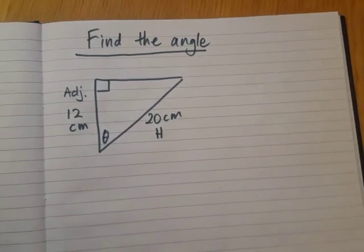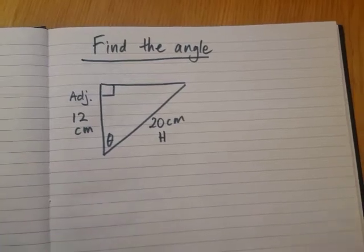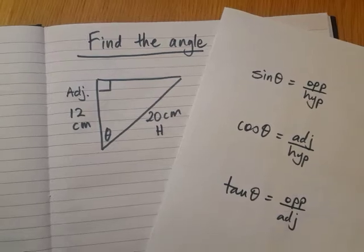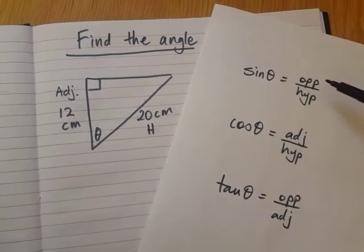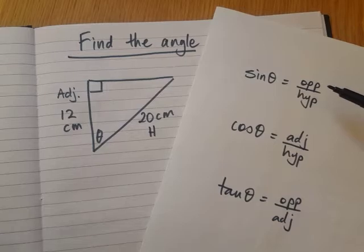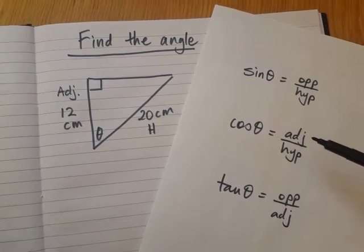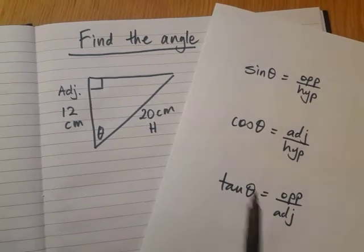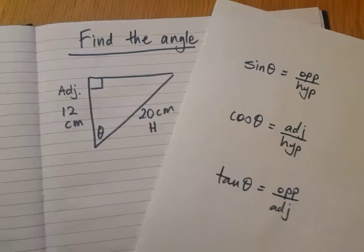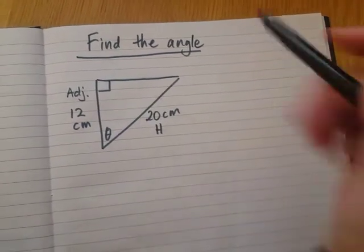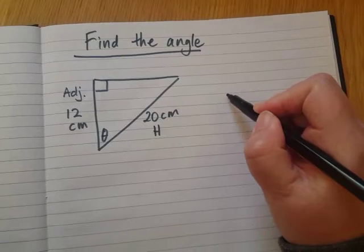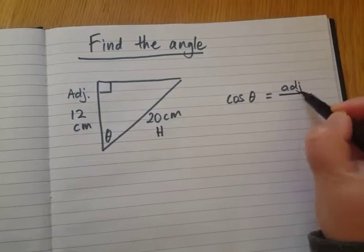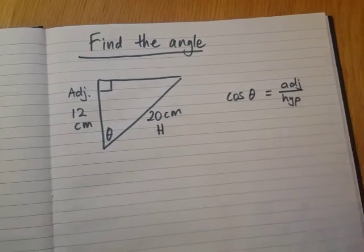And the goal is to find this angle. So we've got the adjacent, we've got the hypotenuse. We're going to go back to our three ratios and we're going to see which one has adjacent and hypotenuse. Oh, it's not that one. Adjacent and hypotenuse. Oh, there we go. Cos. Now, this function cos is short for cosine.